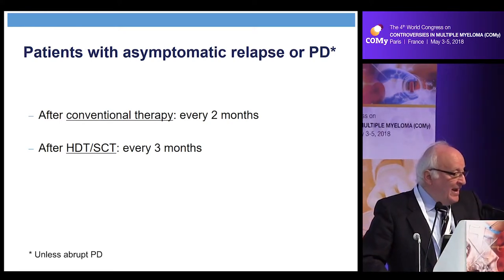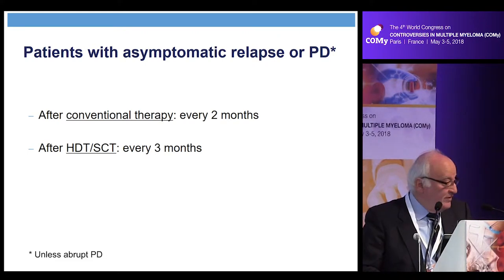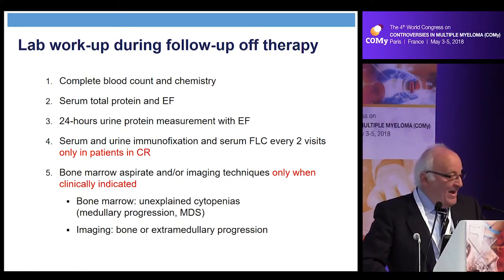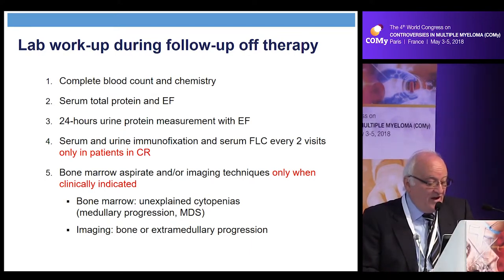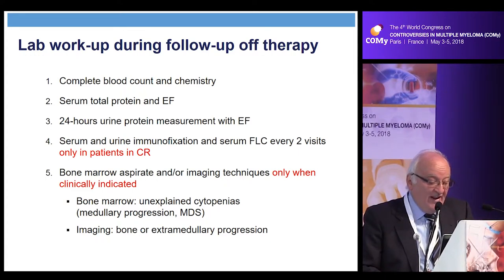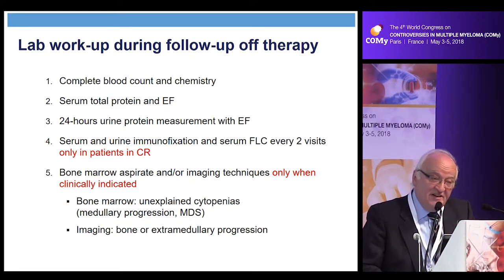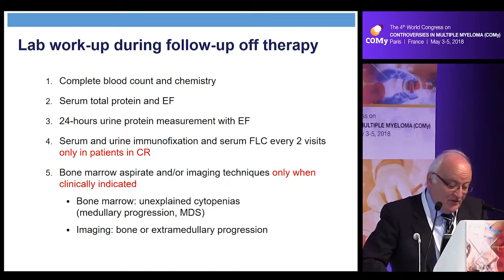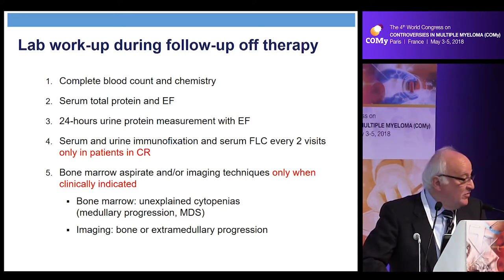Patients with asymptomatic relapse or progressive disease — unless the progression is abrupt — are followed every two months after conventional therapy and every three months after high dose stem cell transplant. During follow-up off therapy, at every visit: complete blood count, chemistry, serum total protein electrophoresis, urine studies, serum and urine immunofixation, and serum free light chains. Every two visits, only in patients in CR. Bone marrow aspirate or imaging techniques only when clinically indicated — bone marrow for unexplained cytopenias, extramedullary progression, or more frequently MDS; imaging for bone or extramedullary suspicion.